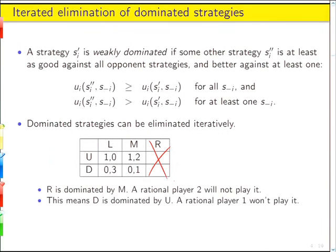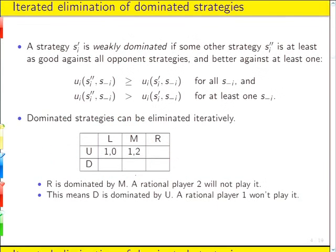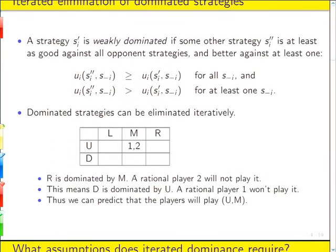Now, once we cross that out, then it turns out that no matter what player two does, player one over here, playing down is dominated by playing up. No matter what player two does over here, playing up we have one is greater than zero, and over here one is greater than zero. So playing down is never a good idea for player one, once they know that playing right is never a good idea for player two.